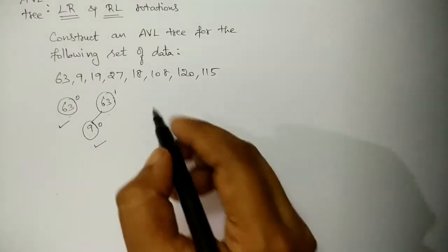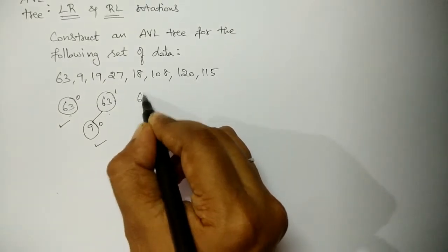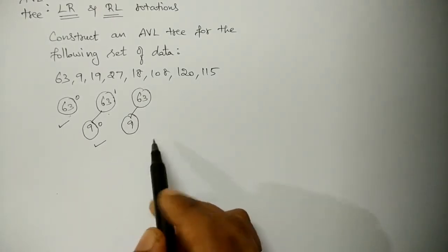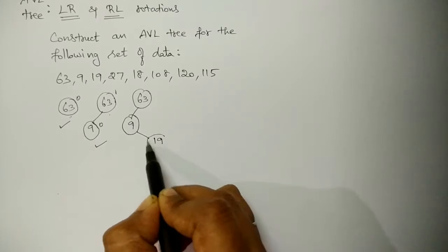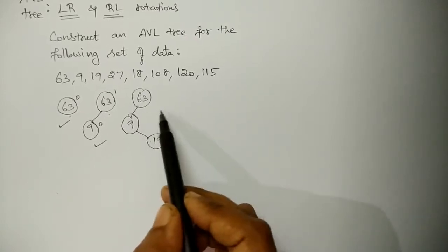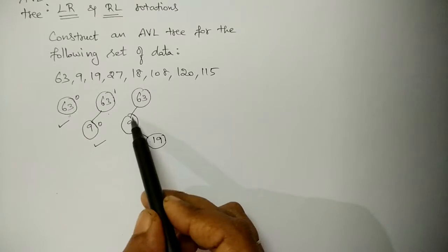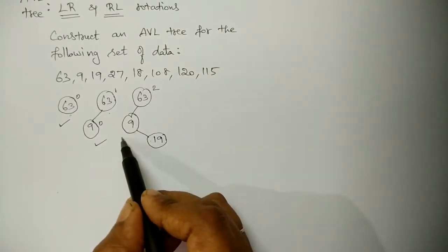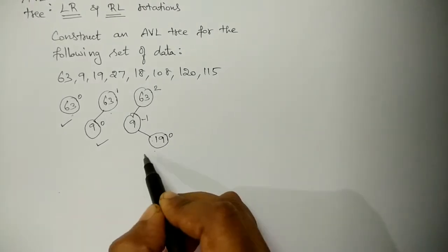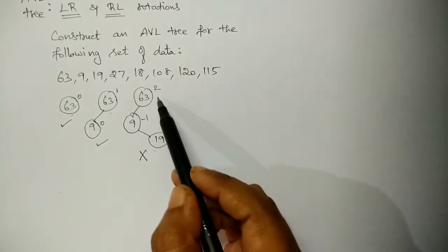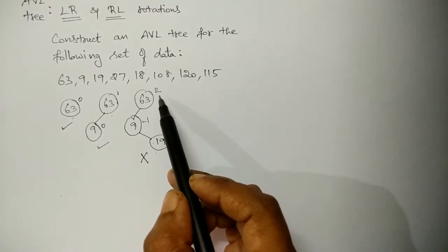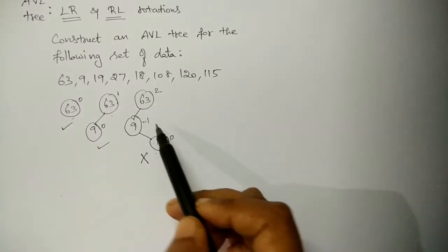Now I want to insert the next data, 19. So 19 is less than 63, move left side, greater than 9, so move right side. It is inserted to the right side of 9. Now calculate the balance factor of all the nodes. Balance factor of 63 is 2 minus 0, it is 2. For 9 it is 0 minus 1, so it is minus 1, and for 19 it is 0. Now the tree is unbalanced because a node is not satisfying the AVL tree property — balance factor is not equal to 0, 1, or minus 1.